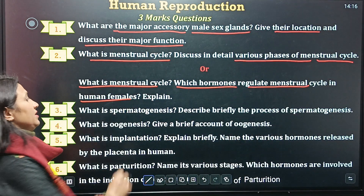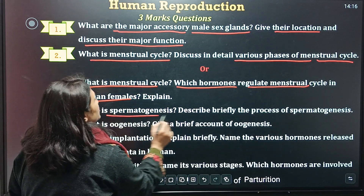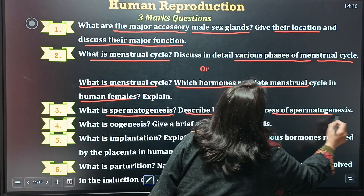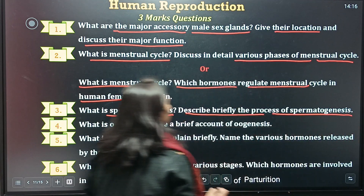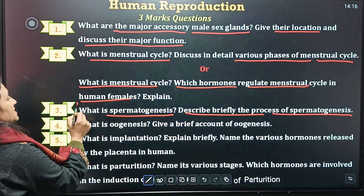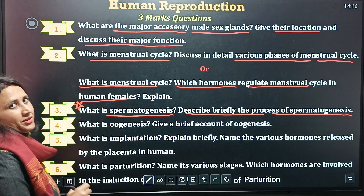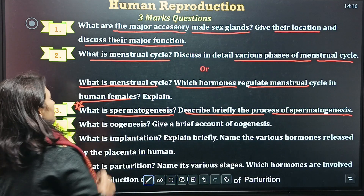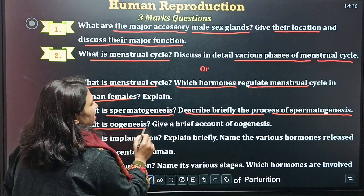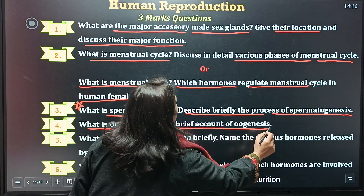Third question is: what is spermatogenesis? Describe briefly the process of spermatogenesis. This is one of the most important questions. Question number 4: what is oogenesis? Give a brief account.